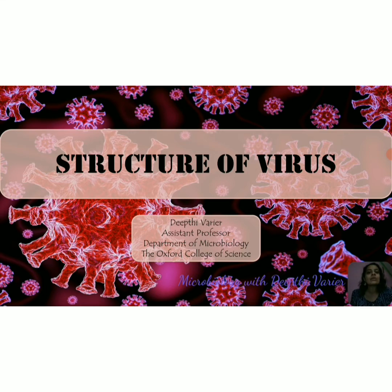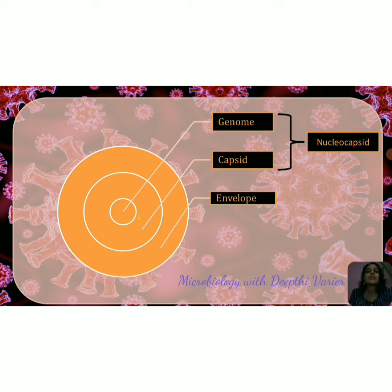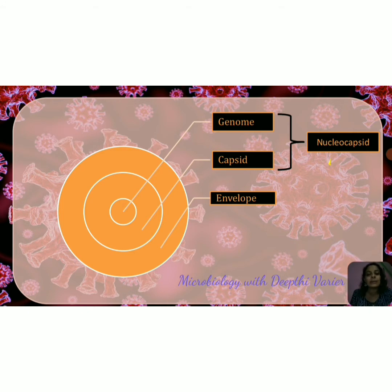In today's lecture we'll be looking at the structure of a virus. Viruses are made up of at least two layers. The core of the virus is made up of the genome, which is also called the genetic material, and this forms the innermost core of the virion or viral particle. Around the genetic material is a protein layer which we call the capsid. These two layers together are called the nucleocapsid.